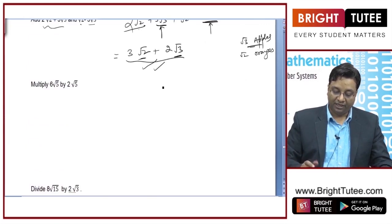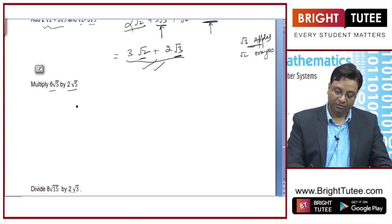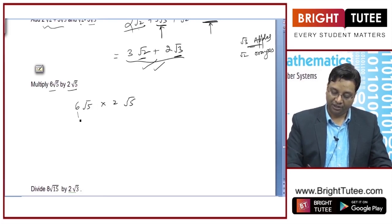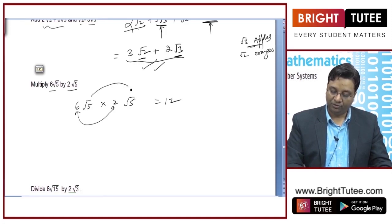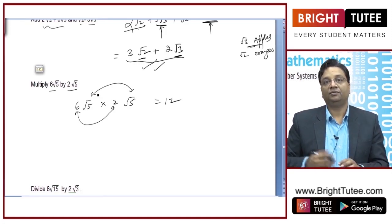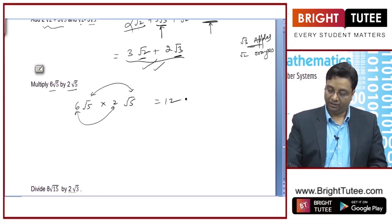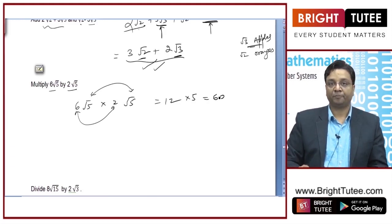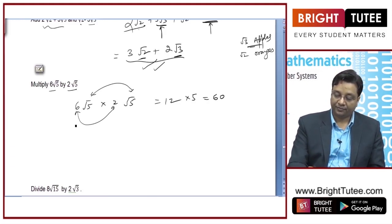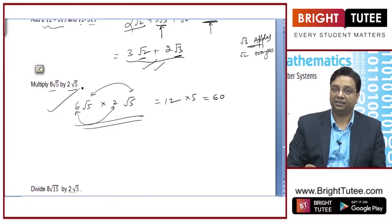Now if you multiply 6√5 by 2√5 — that is 6√5 × 2√5 — multiply the rational parts: 6 × 2 gives 12. For the irrational parts, √5 × √5 is 5. So 12 × 5 gives the answer 60. That is about this multiplication.